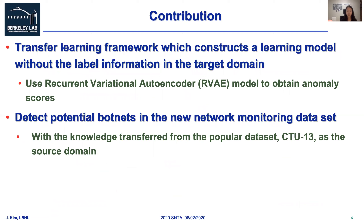In this paper, we propose a botnet detection method that can be performed in cases with no anomalies in the target domain. Moreover, we propose a training method that does not need data marked as normal or abnormal in the target domain. We have two main contributions. First, we present a transfer learning framework for botnet detection capable of constructing a learning model without the need for labeled data in the target domain, using a recurrent variational autoencoder model to obtain anomaly scores for instances from both source and target domains. Second, we verify that the proposed detection approach can detect potential botnets in a new network monitoring dataset as the target domain, with knowledge transferred from the CTU-13 dataset as the source domain.